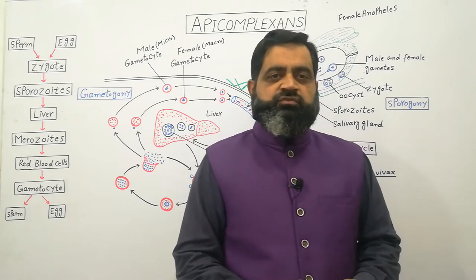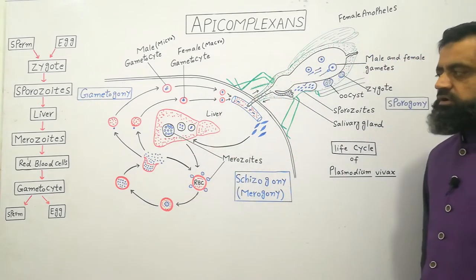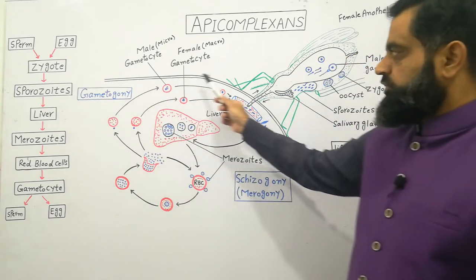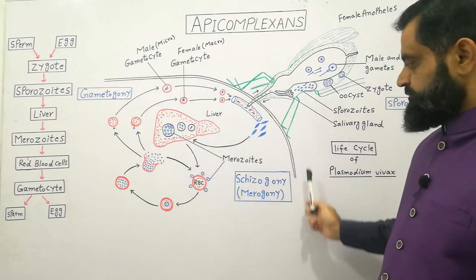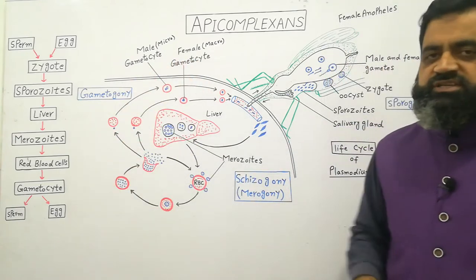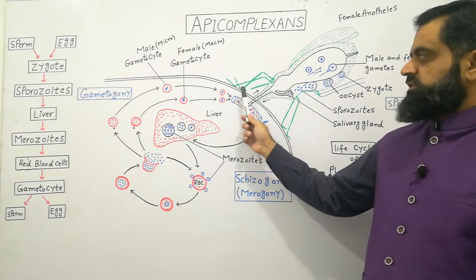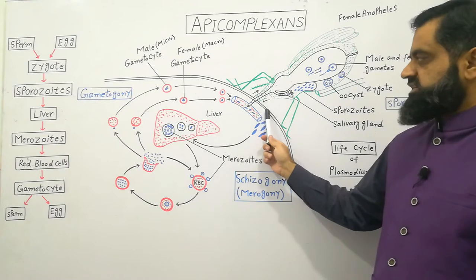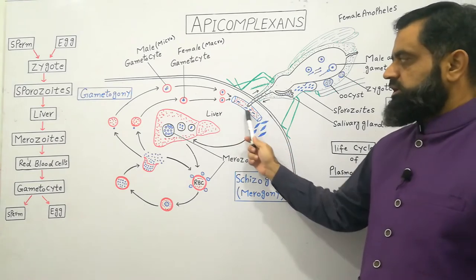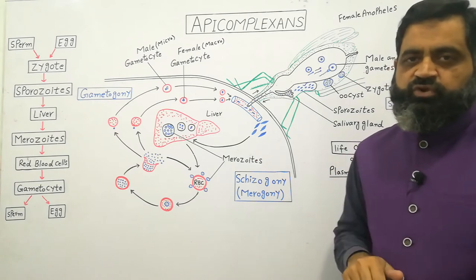I have a diagram of the life cycle of Plasmodium. This represents the body of a human — I have taken a cross section. This body has a skin outer covering, and under the skin there is a blood capillary in which blood is flowing.